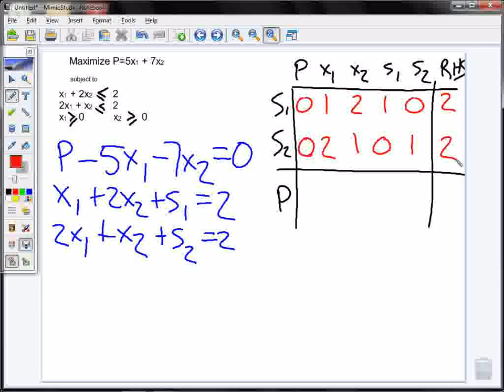Now I'm going to do my objective row. We call that our objective row with p. And how many p's? My coefficient of p here is just 1. I have a negative 5 for my x1. I have negative 7 for x2. And I have no slack variables. And my right hand side is 0.